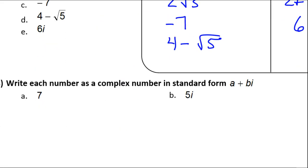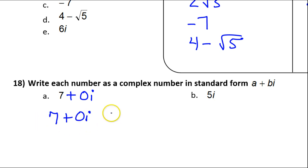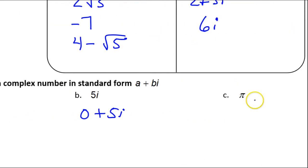Moving on to number 18. Let's practice writing all of these complex numbers in the form a plus bi. 7 is a real number, but only because the imaginary term must have a b of 0. So 7 plus 0i is how you could write it as a complex number in standard form. 5i is a pure imaginary number, but we could look at it as 0 plus 5i — there's the real part and the imaginary part. And pi — we could look at that as pi, the real part, plus 0i.